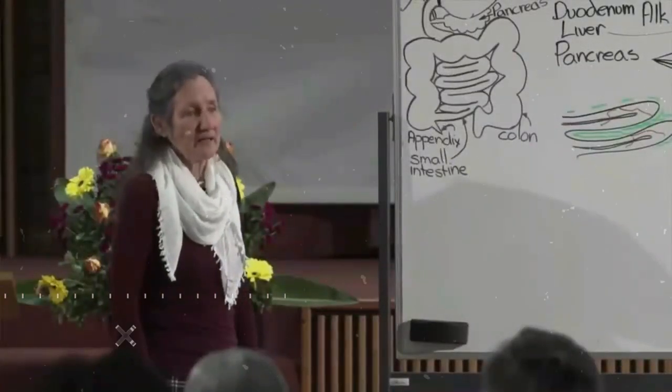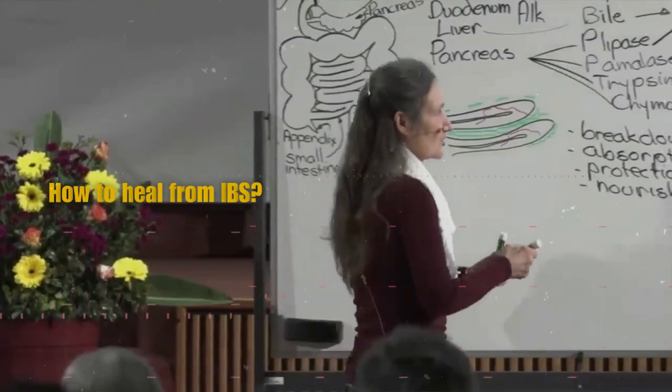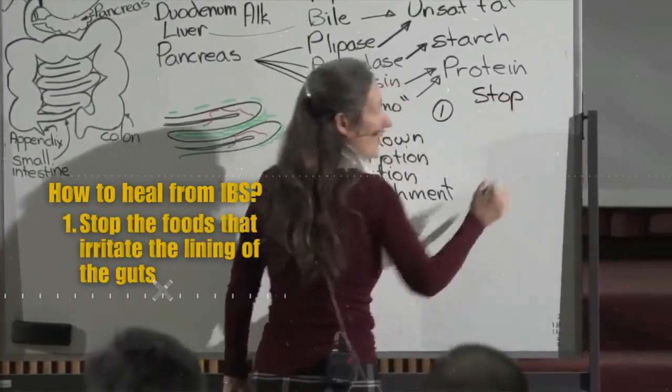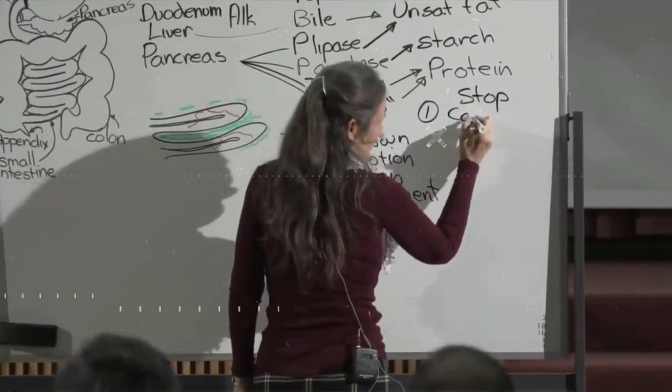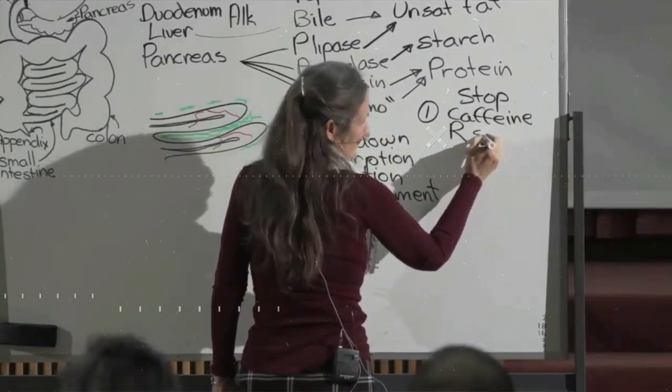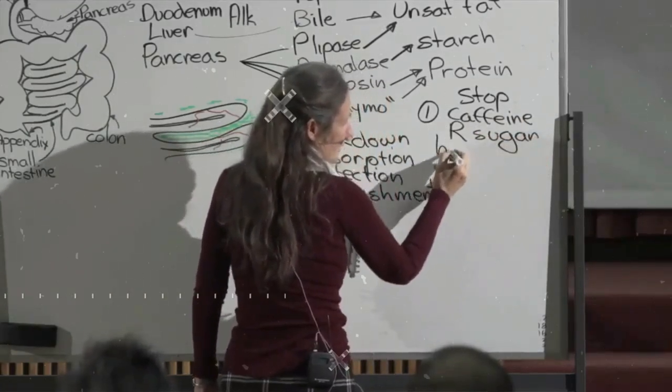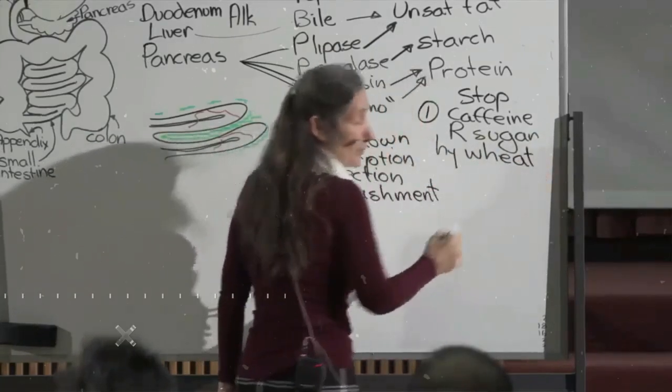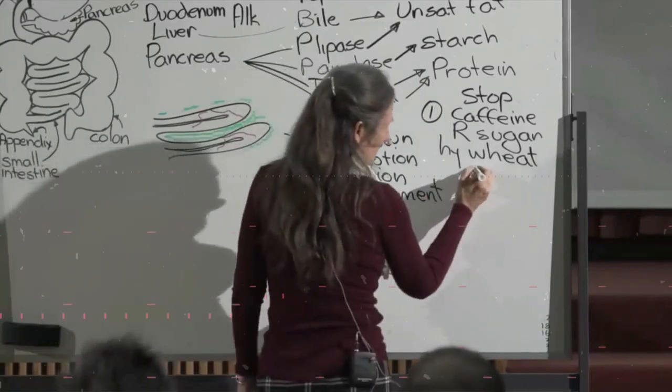So how do we heal from irritable bowel syndrome? Number one, stop. Stop the foods that irritate the lining of the gut. What are the foods that do that? Caffeine. Refined sugar. The hybridized wheat. We touched on the hybridized wheat last night, and I'm going to explore it a bit more tomorrow in the acid alkaline lecture. Dairy.